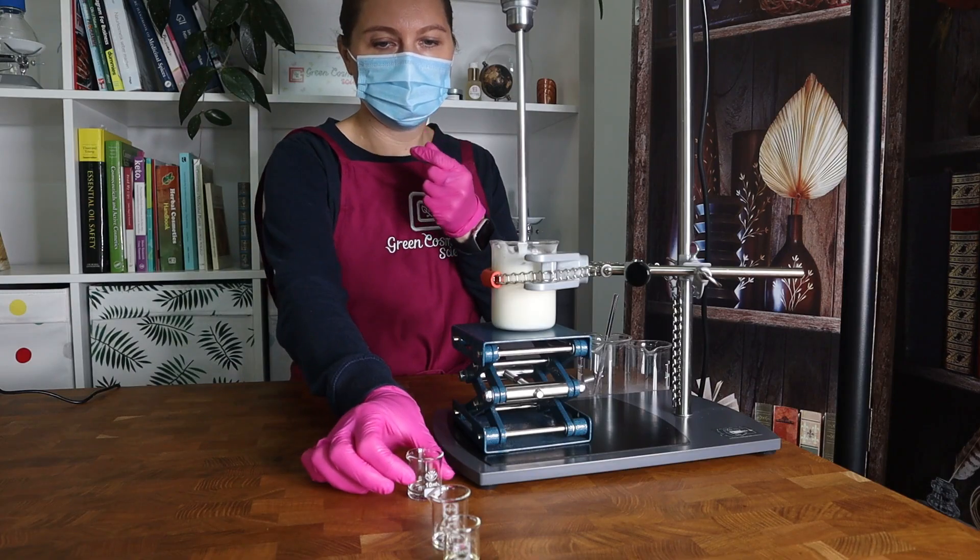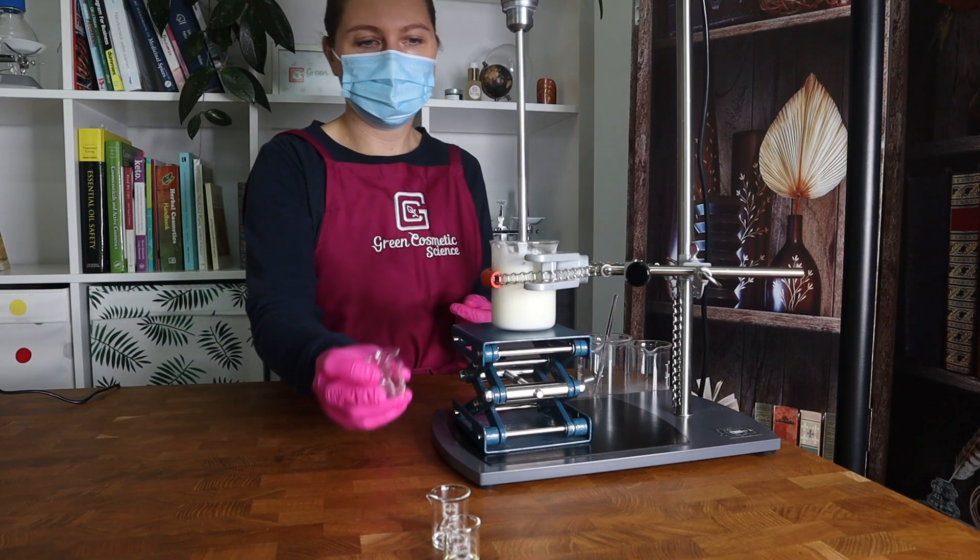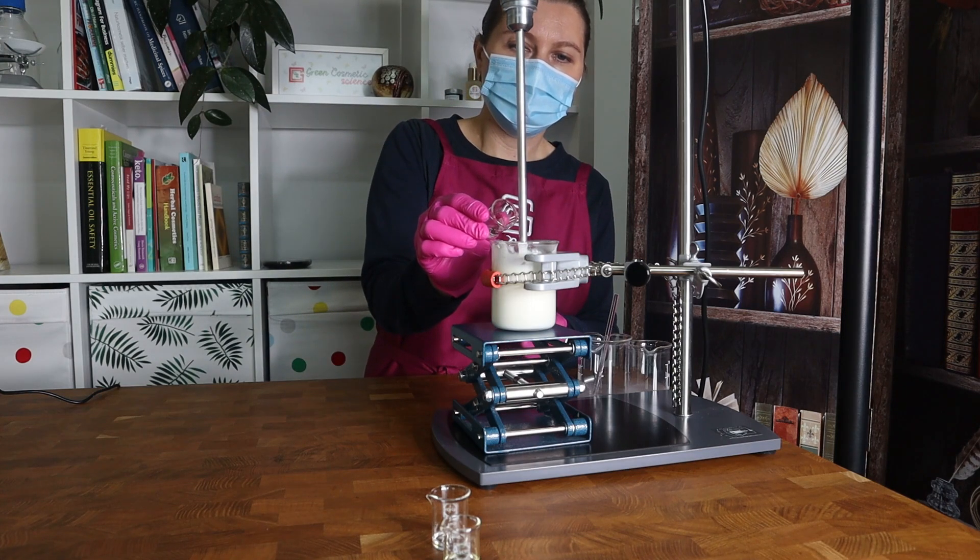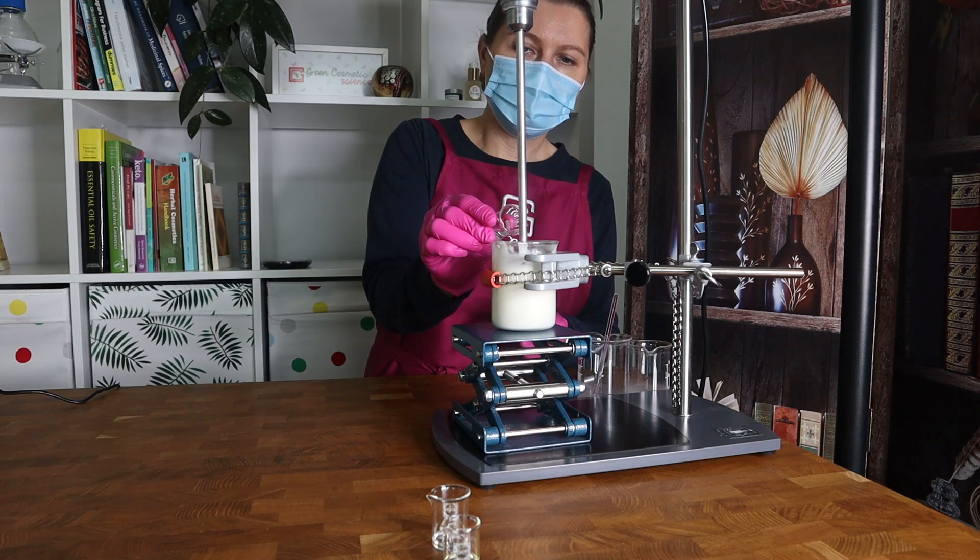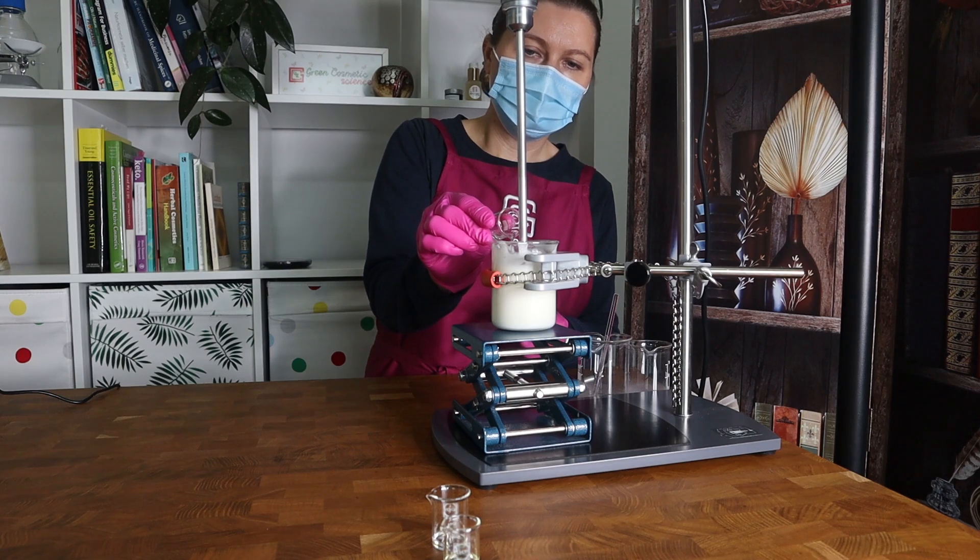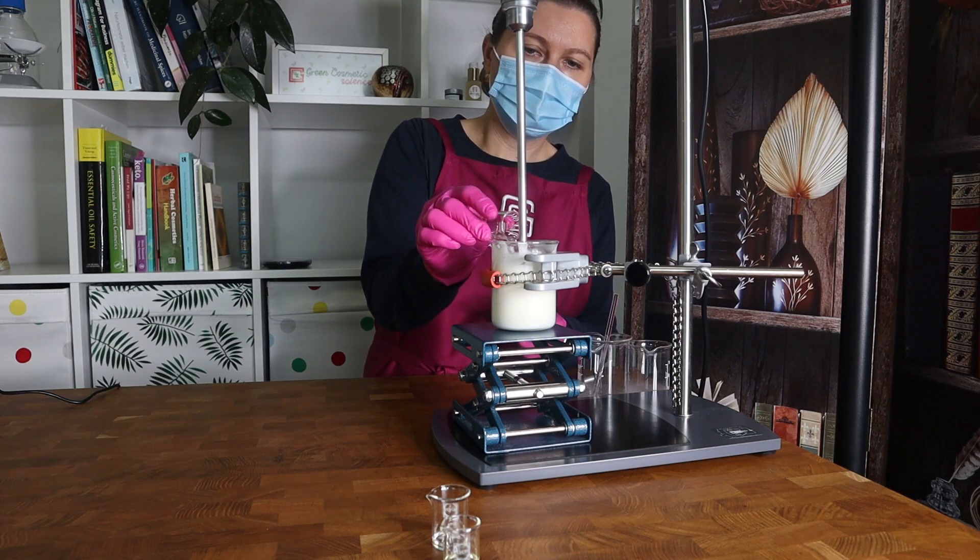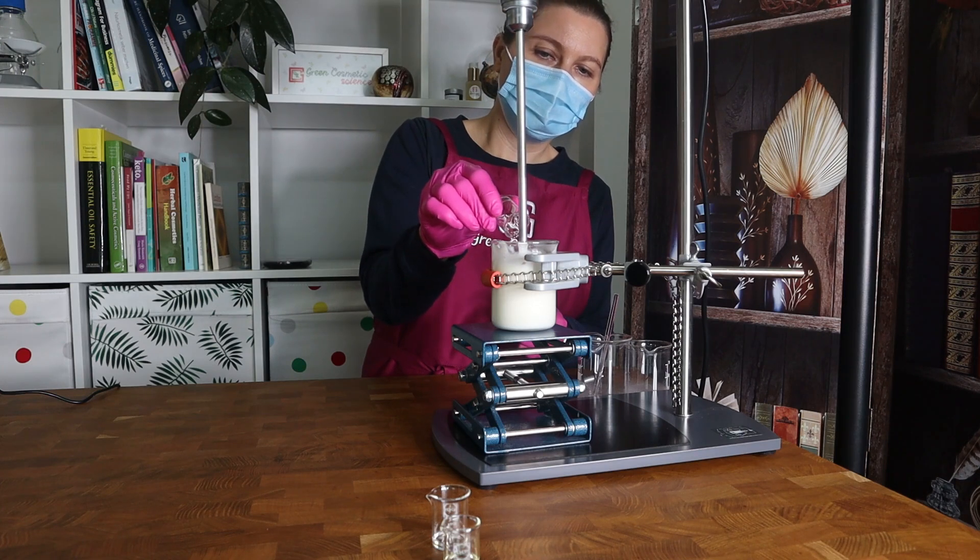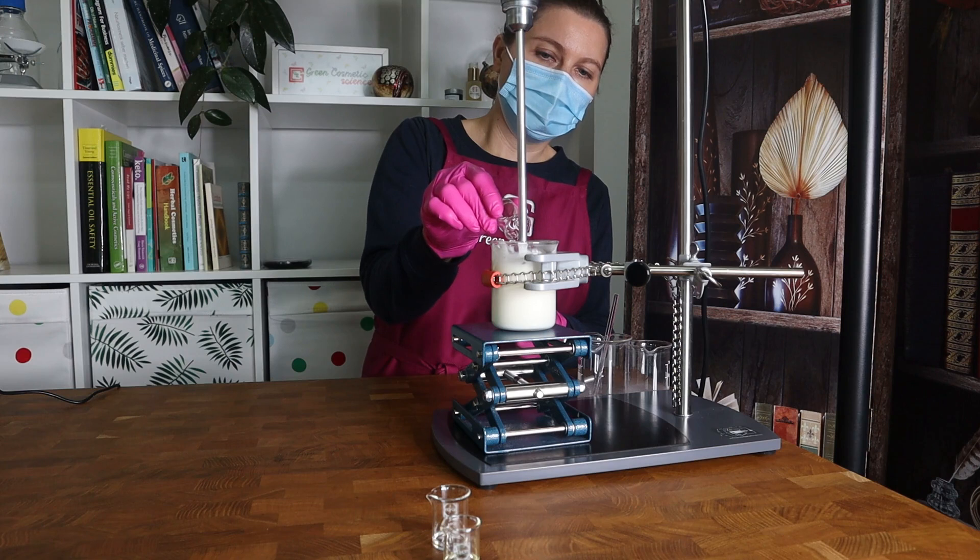The emulsion has been stirring now and it's cooled to under 50 degrees. We can add the cool down phase which consists of panthenol and sodium PCA. We let it stir and cool down further to under 30 degrees so that we can add the preservative and the essential oil.